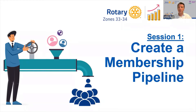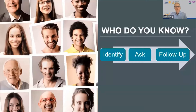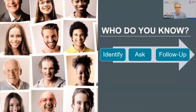Now let me pass over to Mike Dara, Rotary Coordinator for Zone 34, to tell us more about how to create a membership pipeline. We're going to talk about three different ways: the first is called 'Who Do You Know,' then Chris Jones will show you how to do a gap analysis, and Terry Weaver will talk about the personal contact. The goal is to get people to identify a prospect, get them to ask that person, and most importantly, to follow up.